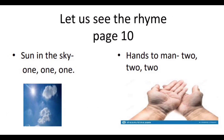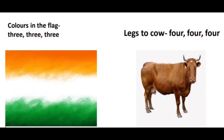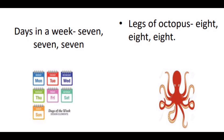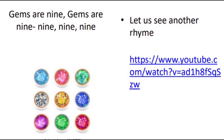A rhyme was suggested: 'Sun in the sky — one one one; hands to man — two two two; colors in the flag — three three three; legs to cow — four four four; fingers to hand — five five five; faces of dice — six six six; days in a week — seven seven seven; legs of octopus — eight eight eight; gems are nine — nine nine nine.' This is a really excellent rhyme with great scope to integrate these concepts with environmental science.